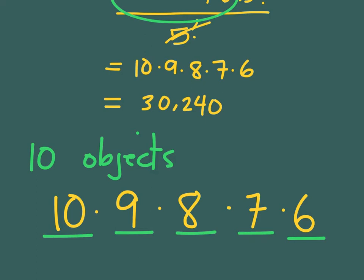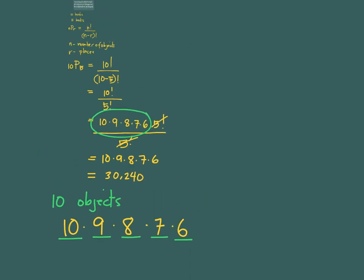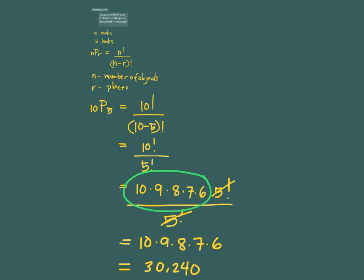It's basically 10 times 9 times 8 times 7 times 6. So this is also how you could see permutation, aside from using the formula N factorial over N minus R factorial. I hope the idea of permutation is clear. You have the formula and you also have another way to look at it in terms of the fundamental counting principle.